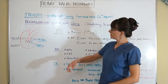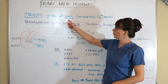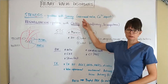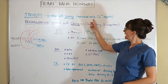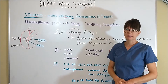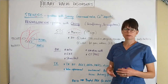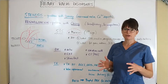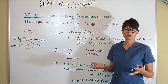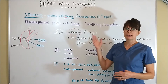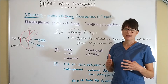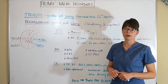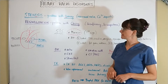In heart valve stenosis, there is a problem with the opening of the valve, which can be due to a narrow valve — for a variety of reasons including congenital causes — as well as calcium deposits. As we age, calcium deposits in our blood vessels make them stiffer, and a cardiologist once told me the older we get, the more likely we are to develop stenosed valves. The most commonly stenosed valve is the aorta, so aortic stenosis is a very common disorder.